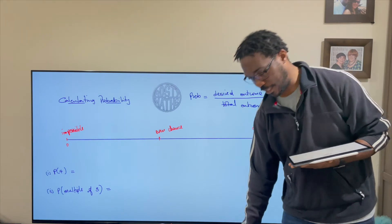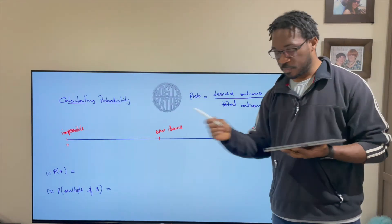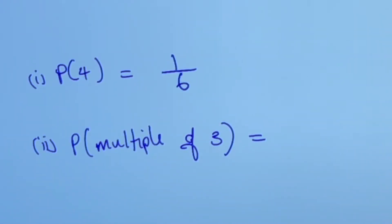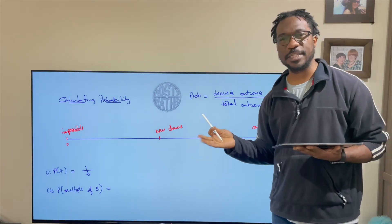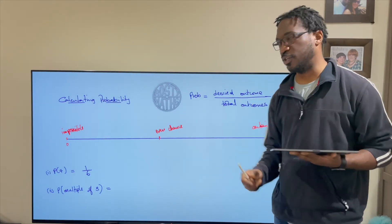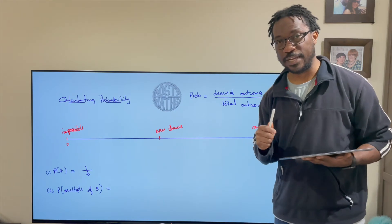So I hope you get that. The probability of getting a four therefore is one out of six and just like that I've represented my probability as a fraction which is one of the ways we said we can represent it.